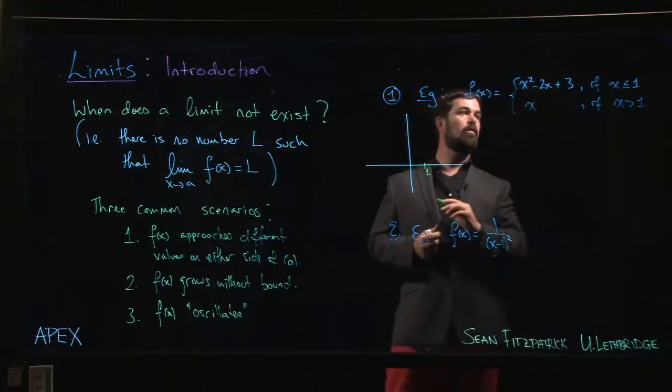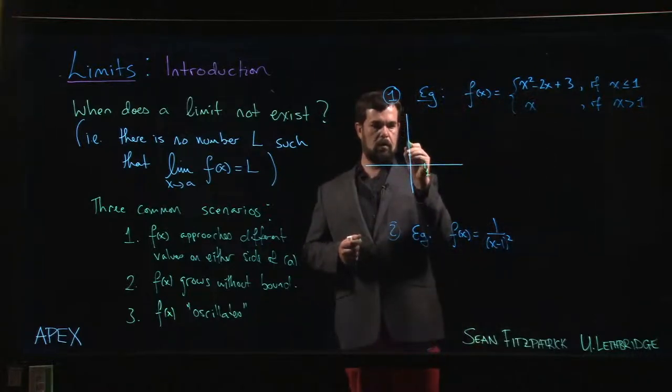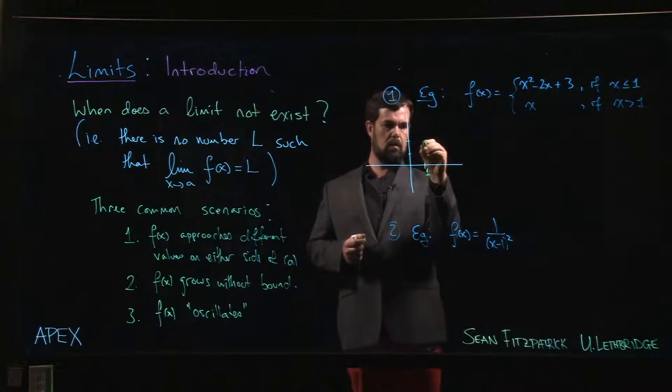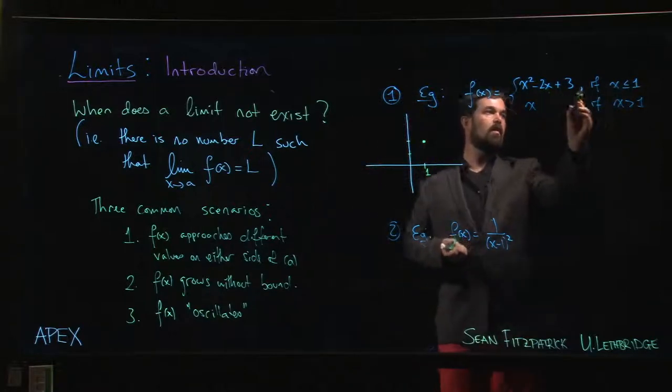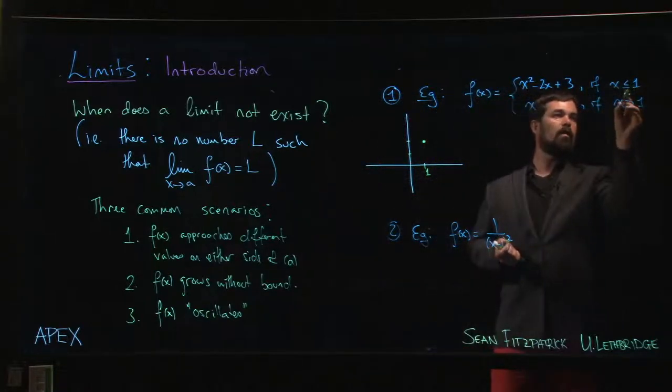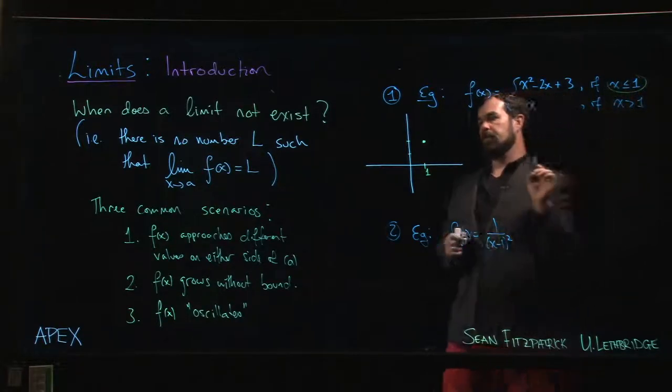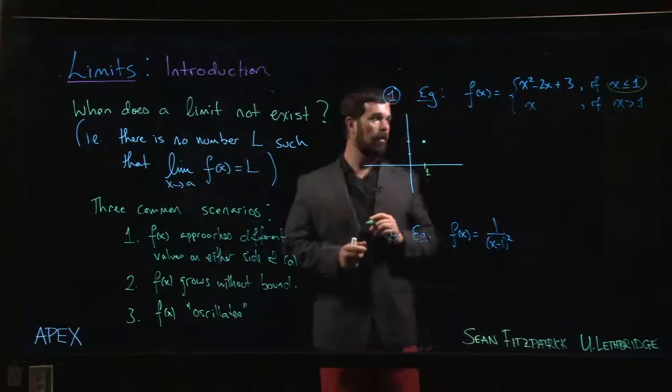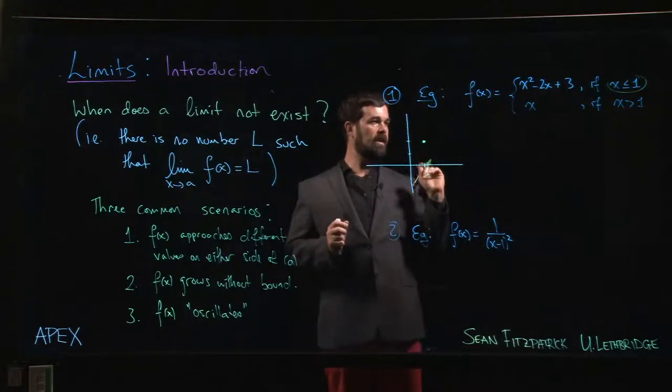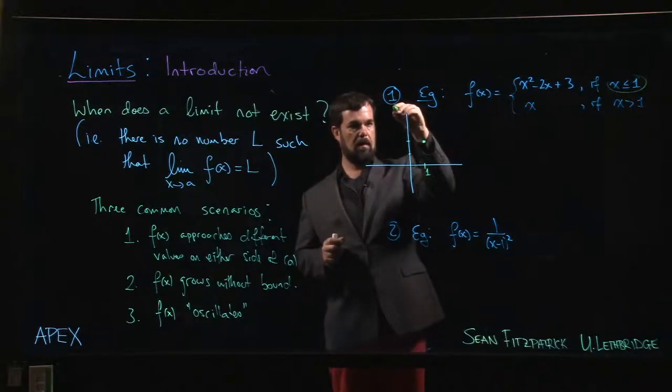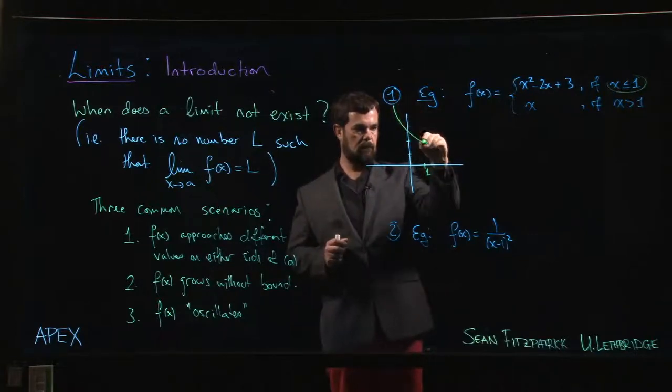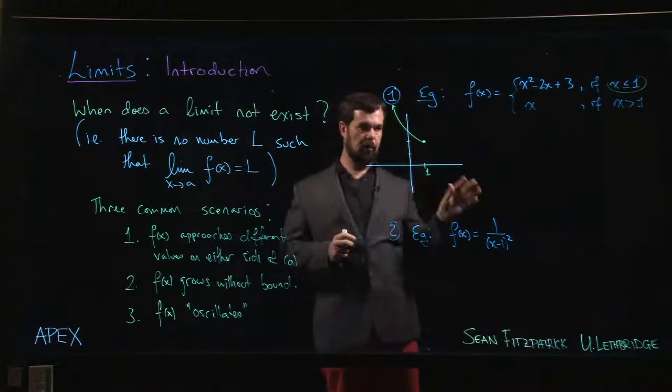So when x is equal to one, we find that the value of f of x is two—one minus two plus three, so one two—and we'll fill in that point because when x is equal to one, x equal to one is included in there, so f of one is defined. We can plot that point and that happens to be actually the vertex of that parabola. So if we were to plot it, we would have just half the parabola, so we'd have something like that.